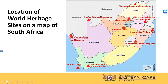Moving towards the East Coast, going downwards on your map, you will see on the border between KwaZulu-Natal and Lesotho is uKhahlamba-Drakensberg Park. Then moving further to the eastern side, you have the Barberton-Makonjwa Mountains. And the final one is iSimangaliso Wetland Park, located on the north coast of KwaZulu-Natal.